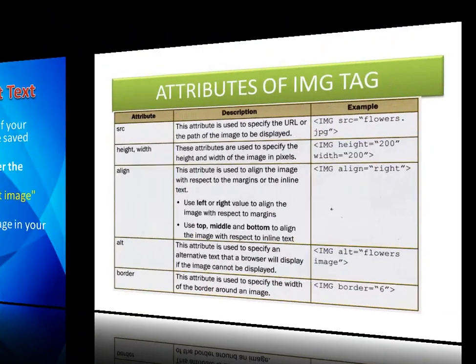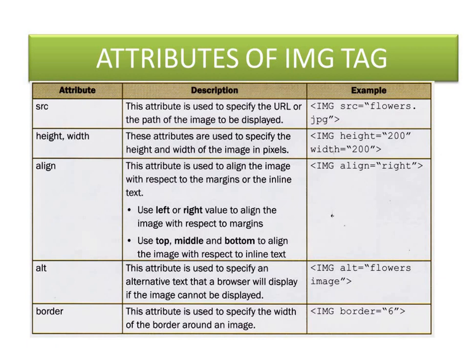The attributes of the image tag are: src — this will specify the URL or path of the image to be displayed, for example img src equal to flowers.jpg. Then height and width — these specify the height and width of the image in pixels, for example img height equal to 200, width equal to 200. Next is align — that will align the image with respect to the margin. You can use left or right to align with respect to margins, and top, middle, or bottom to align with respect to the inline text. The example is img align equal to right. Next is alt — used to specify an alternative text that a browser will display if the image cannot be displayed, for example img alt equal to 'flowers image'.